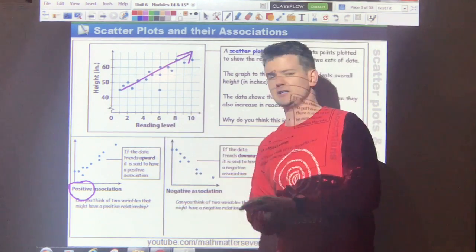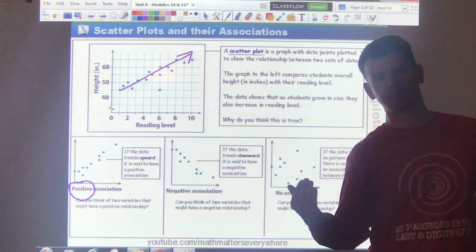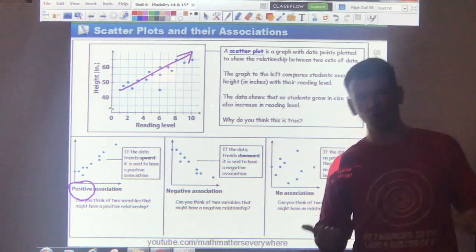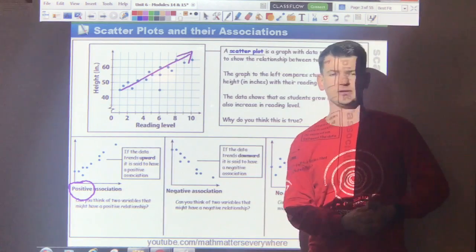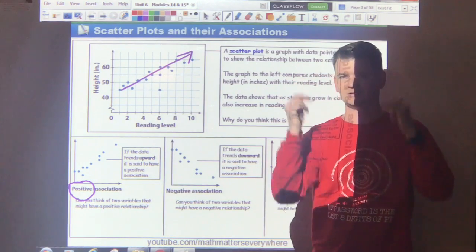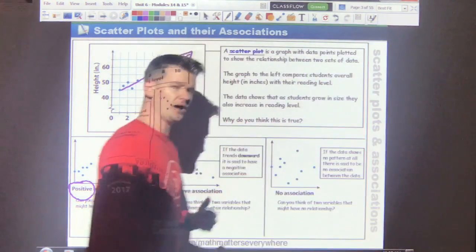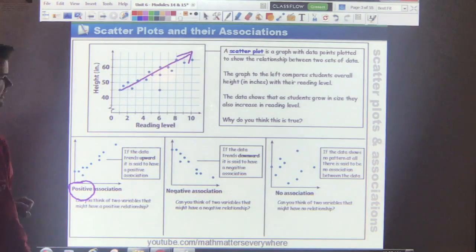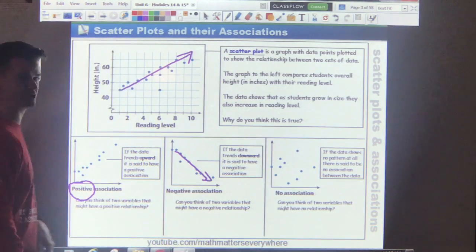So why would the reading level increase and the height increase? Well think about it. If you're a kid, as you get older, your reading level should increase. You're probably also getting taller. So that makes logical sense. We have a positive association, we probably also have what's known as a negative association.